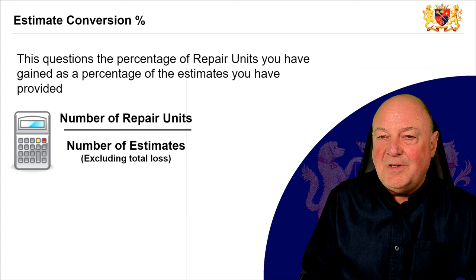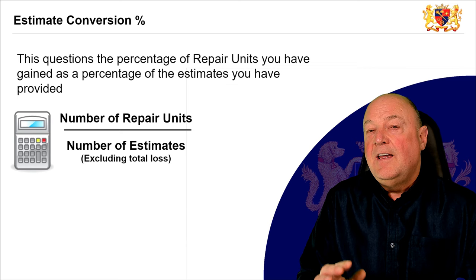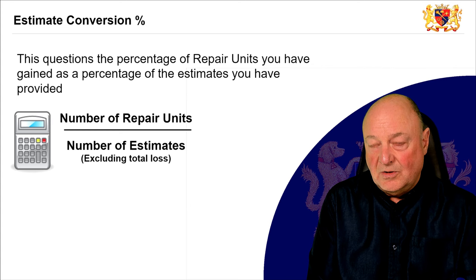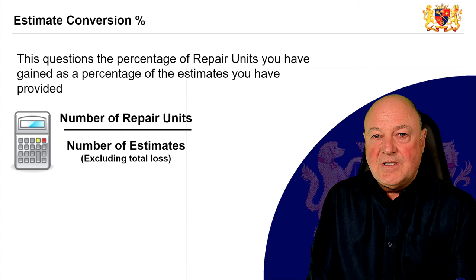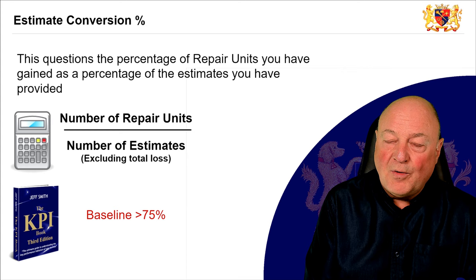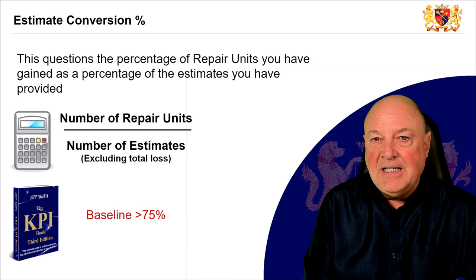For your budgeting and business planning you would want to include the total number of estimates including those filtered out for total loss — that's covered in a different video in the series. To simplify this LinkedIn poll I've taken out the total loss. So let's say you've done a number of estimates, you remove the total losses, and of what's left, how many would you reasonably expect? The baseline from the KPI book, third edition, is greater than 75%.